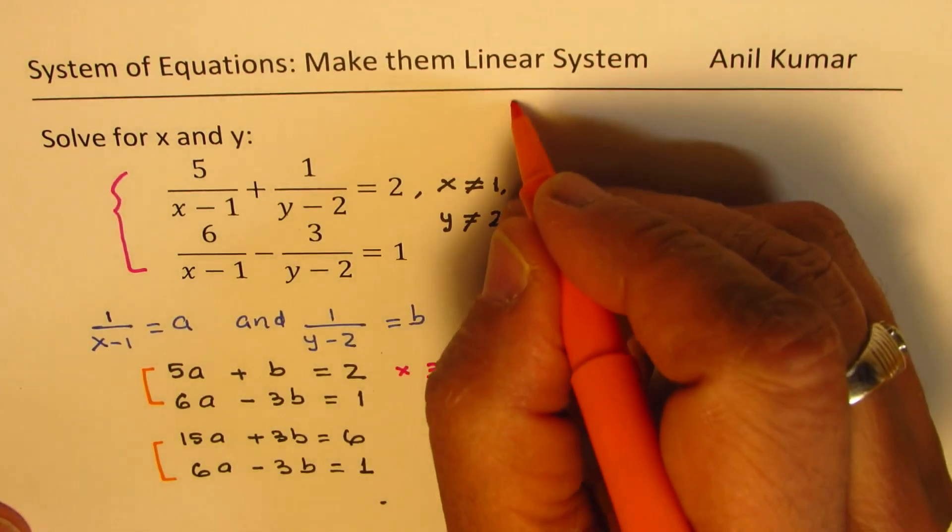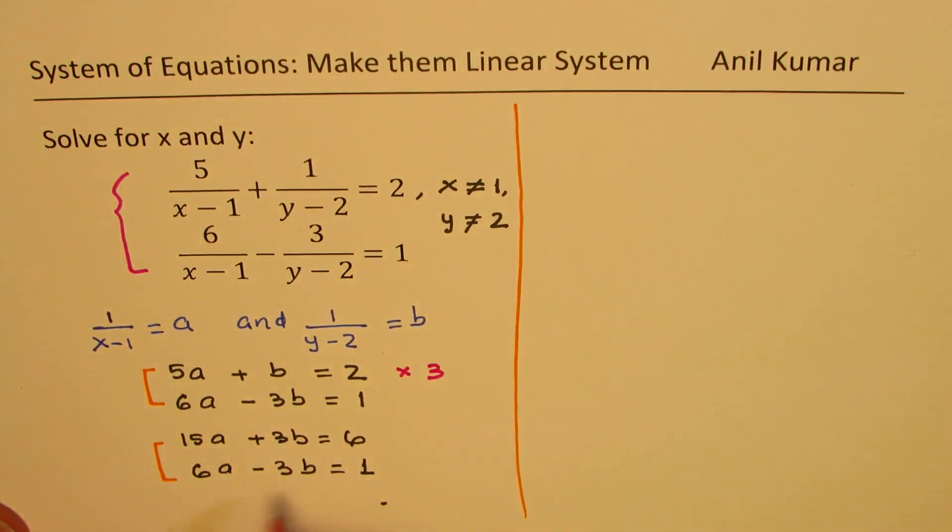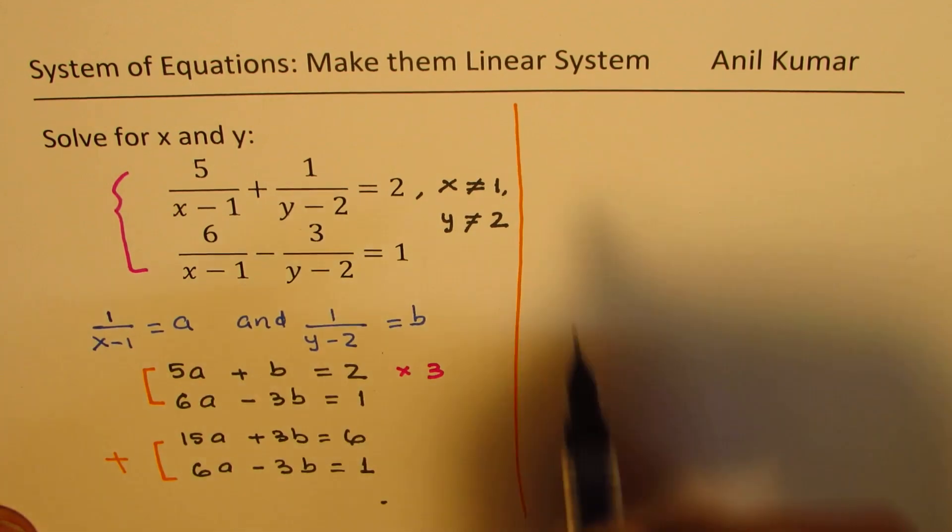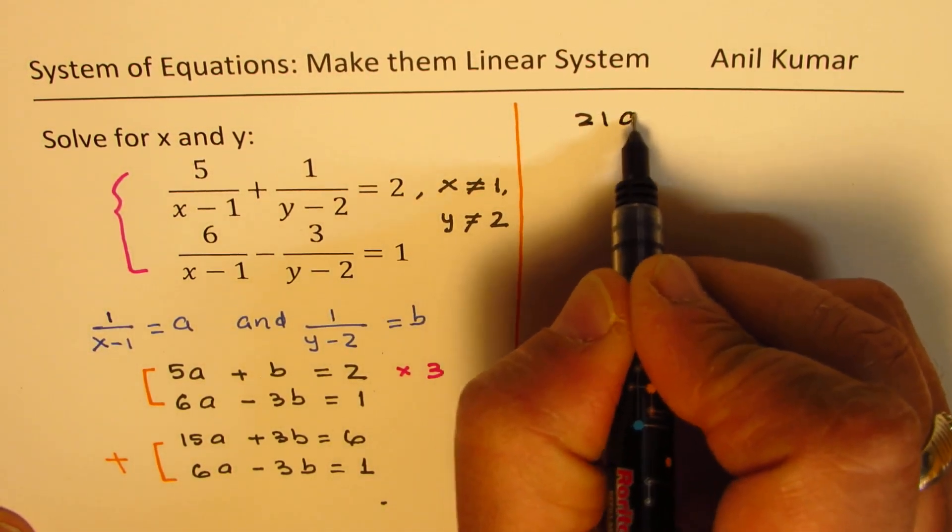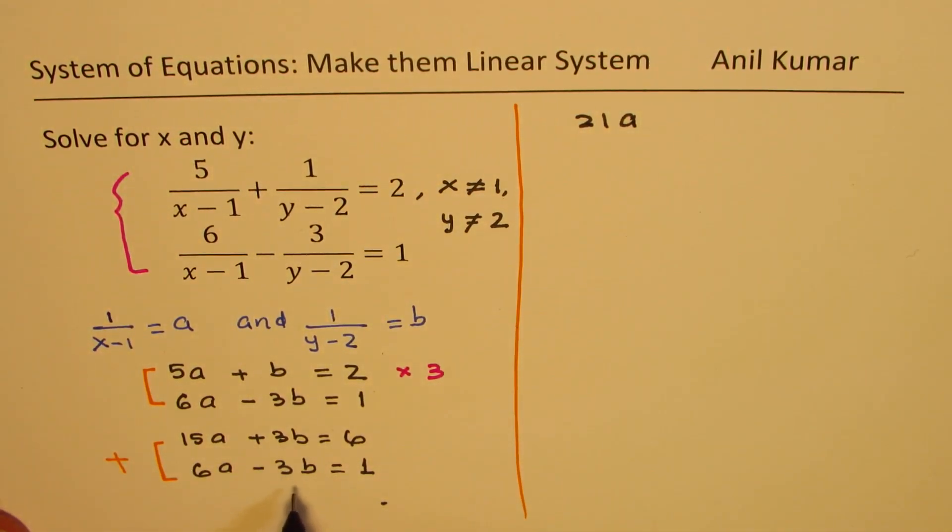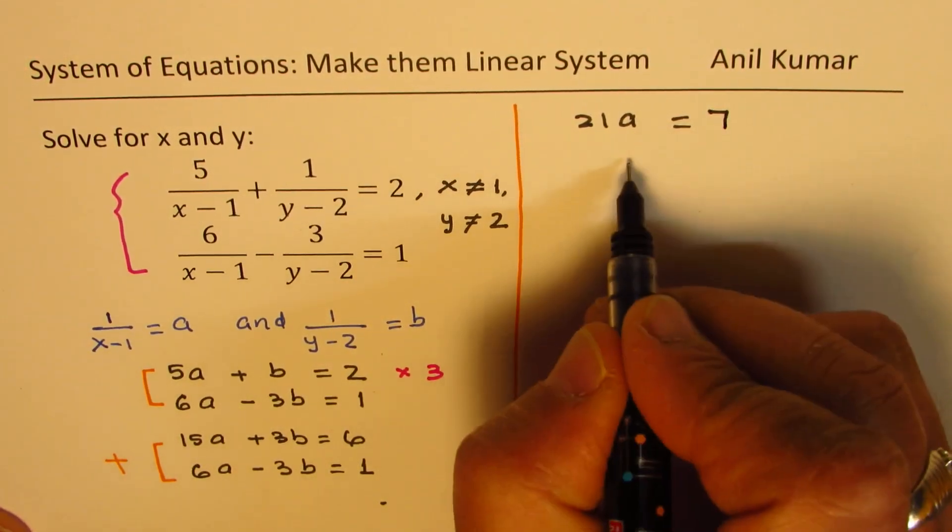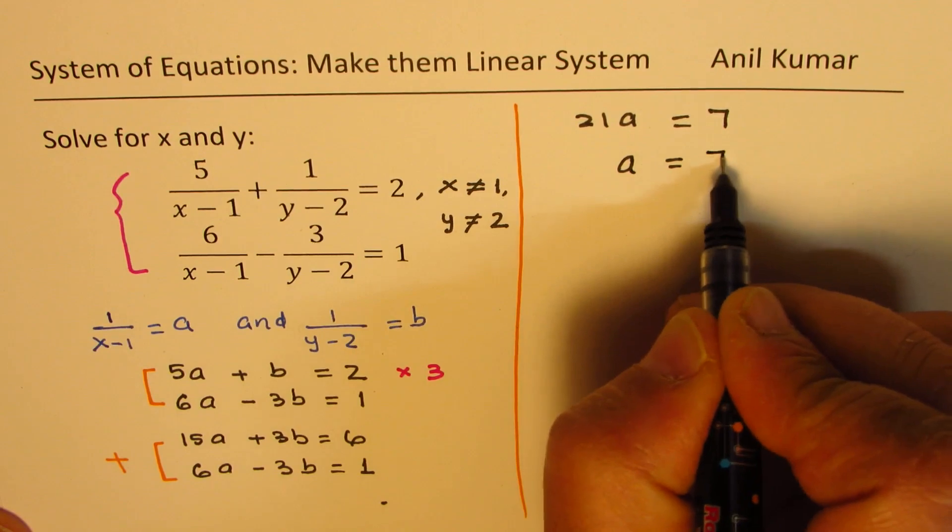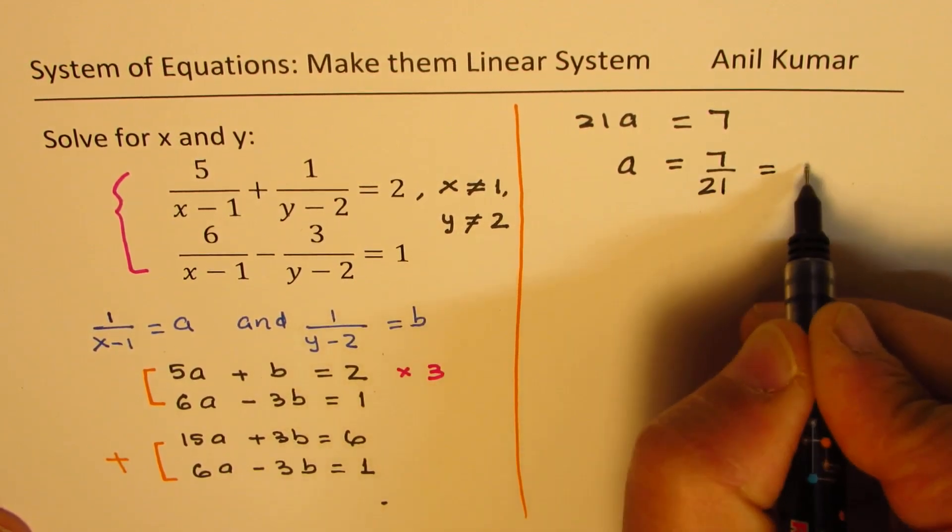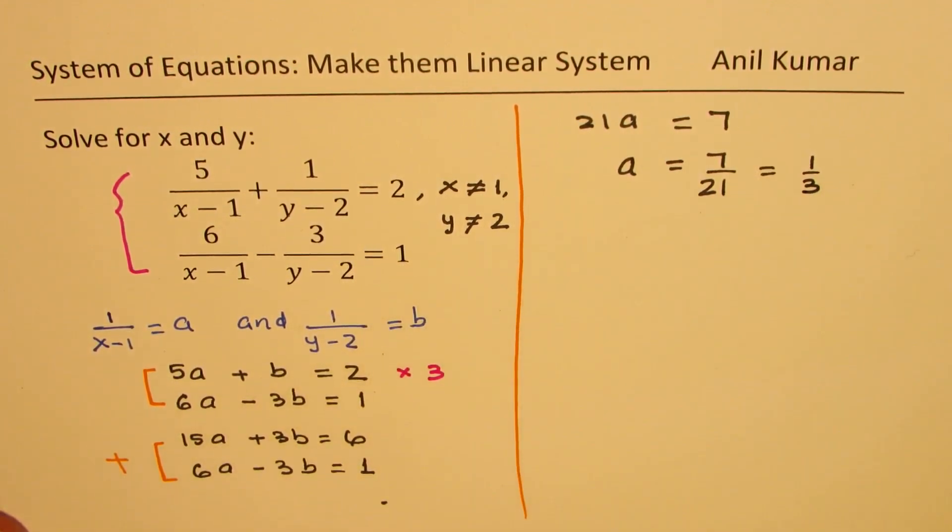Now to solve this, we can actually just add them up. So adding these equations, we get 15a plus 6a as 21. So we get 21a and plus and minus 3b is 0, equals 6 plus 1 as 7. So we get the value of a as 7 over 21, which is 1 over 3.